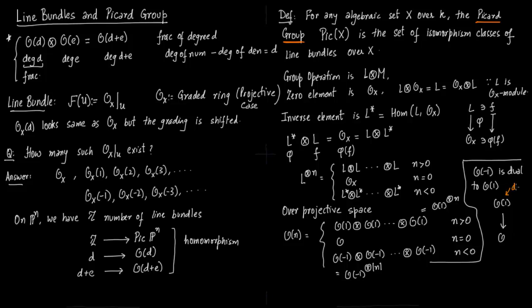Now O(1) has degree of numerator is one more than degree of denominator. In O, because O is not shifted at all, the degree of numerator is same as degree of denominator. So what you do, you multiply by 1 by F. So 1 by F has degree - F has degree 1. That means this fraction 1 by F has degree minus 1.